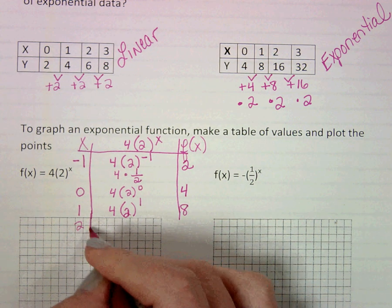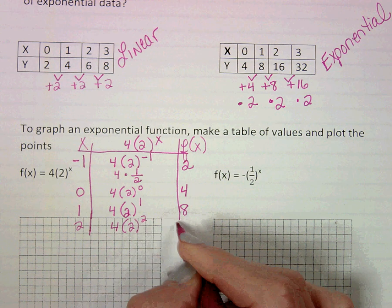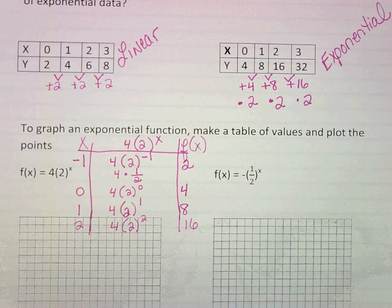And then I'm going to pick two, four times two squared. And so that would come out to 16.